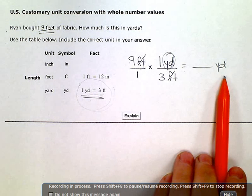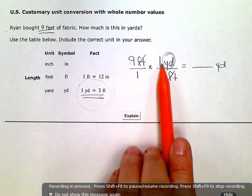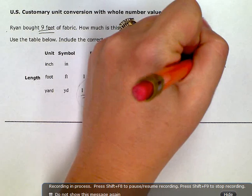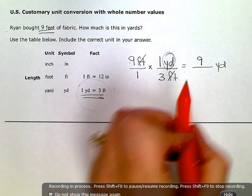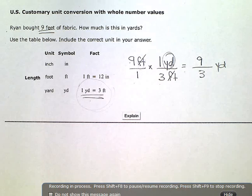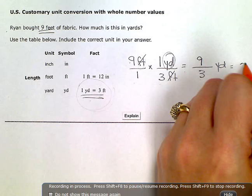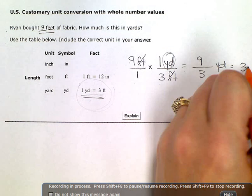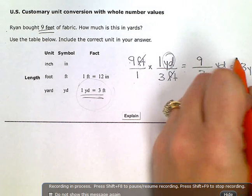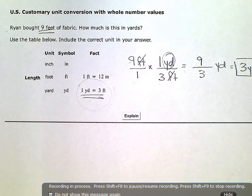Now I'm just going to multiply across. Nine times one in the numerator is nine. One times three in the denominator is three. Now I simplify. Nine thirds simplifies to exactly three yards, which is my final answer.